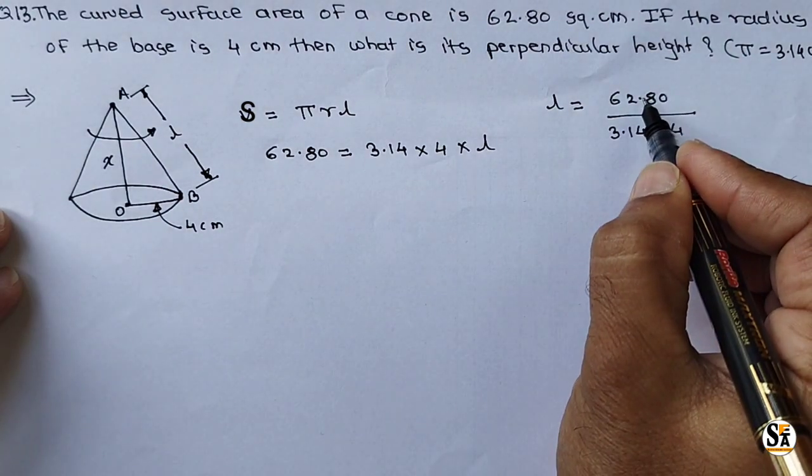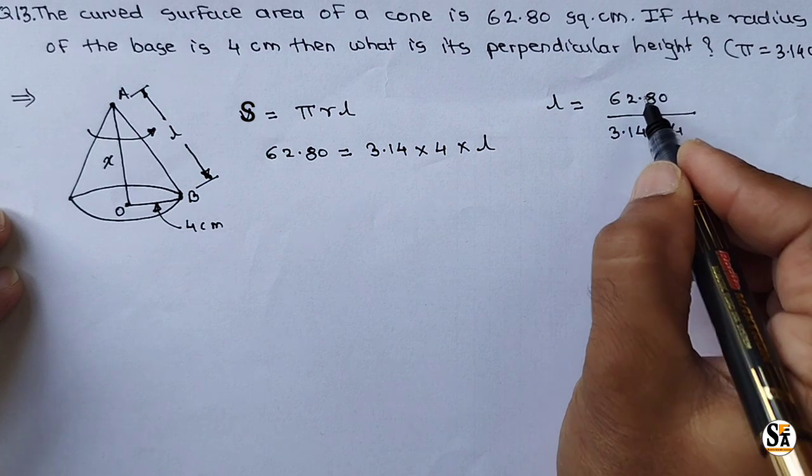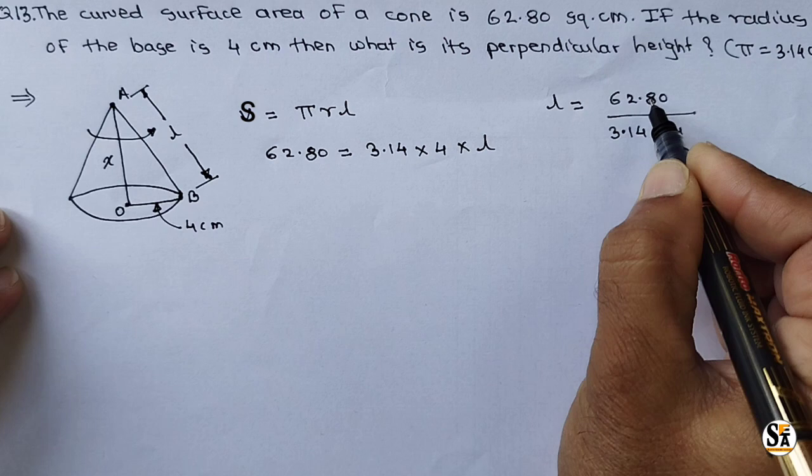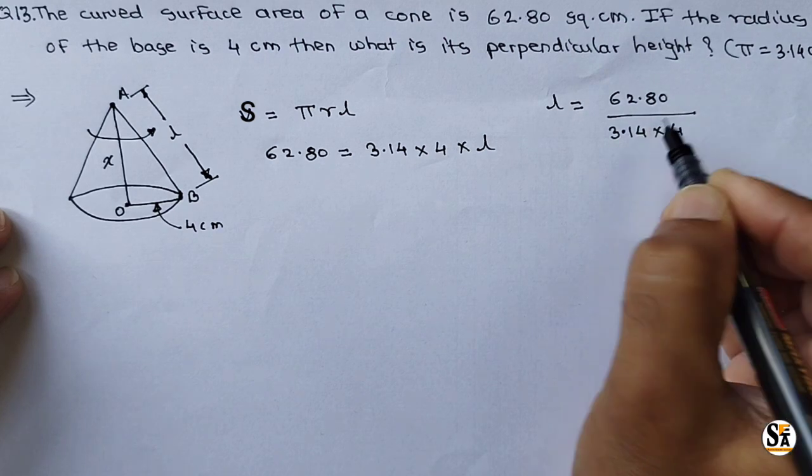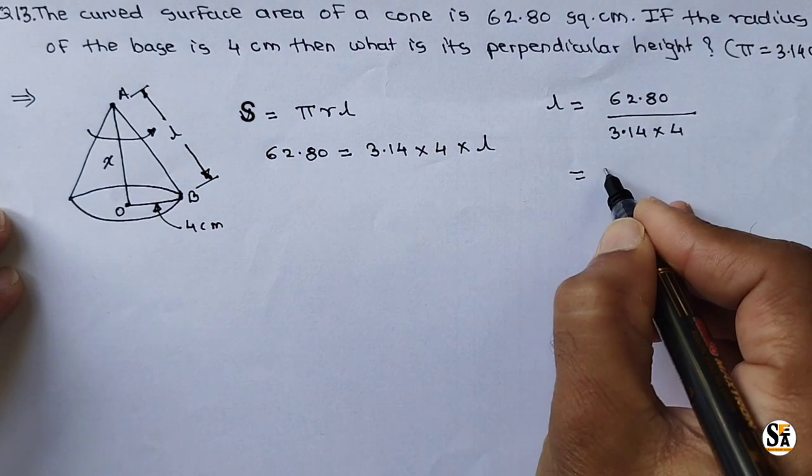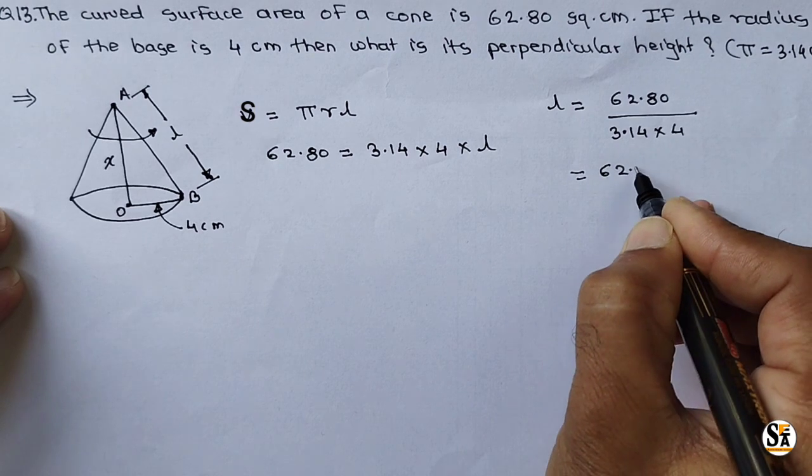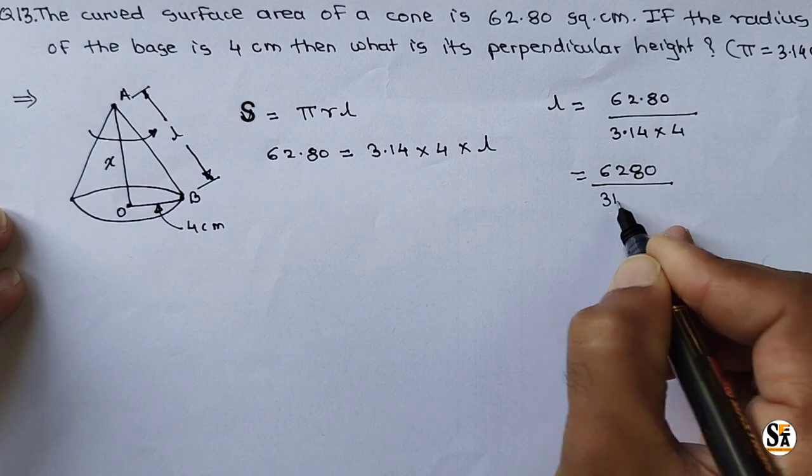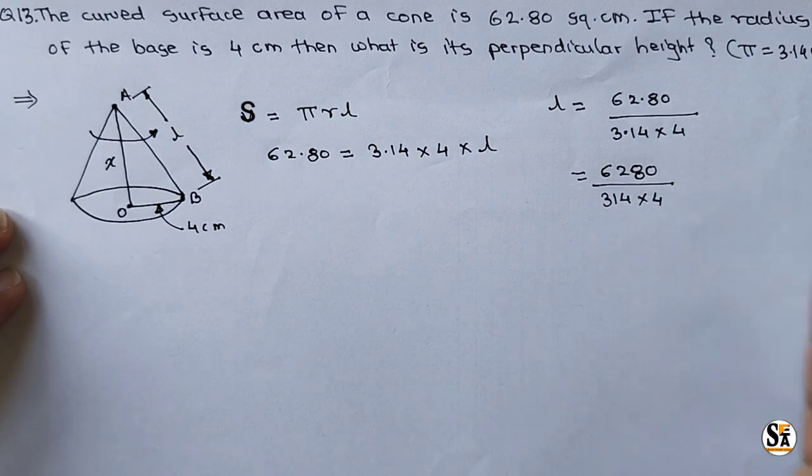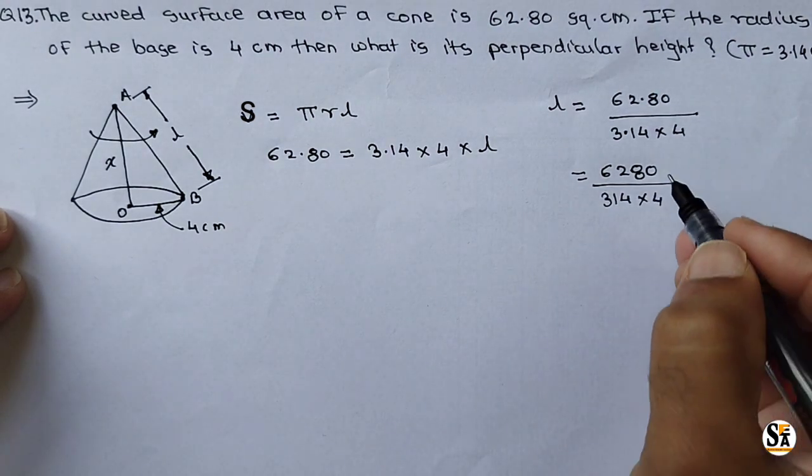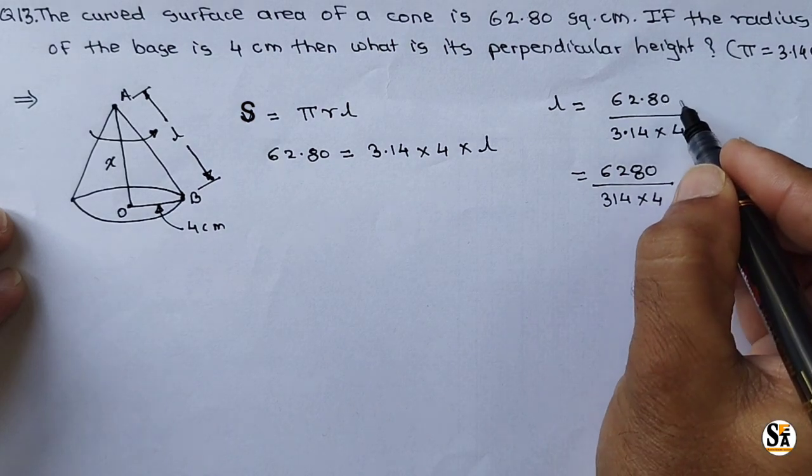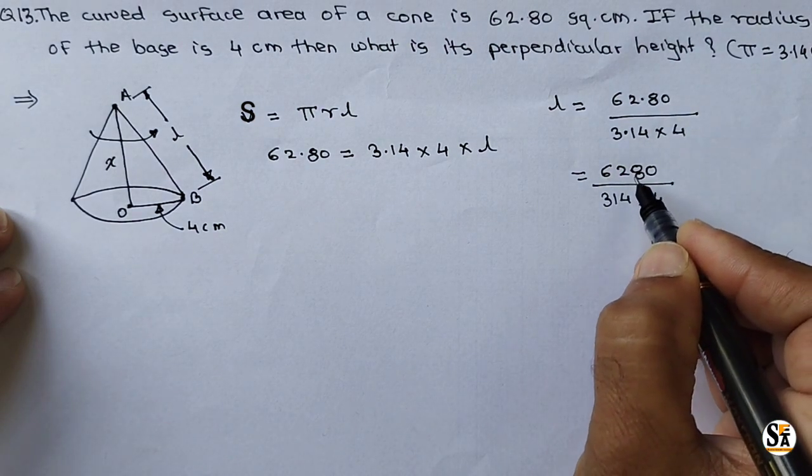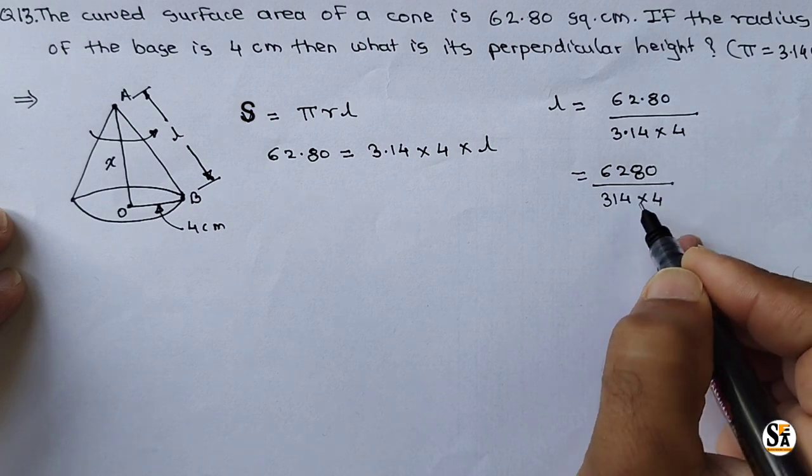Now see here, there are decimal points on numerator and denominator. But after decimal points, 2 digits are there on numerator and denominator. So we can cancel this. Instead of point, we can write here 62.80 divided by 3.14 into 4. Now this is simple. Just multiply 10 raised to 2 or 100 on both sides. You can cancel this decimal point or compensate this decimal points.